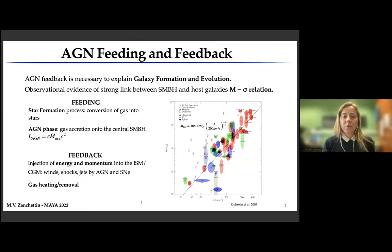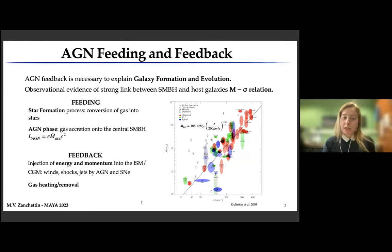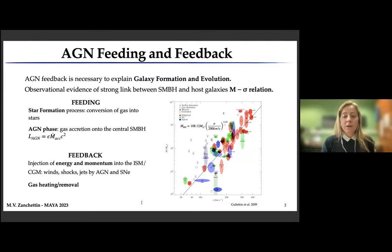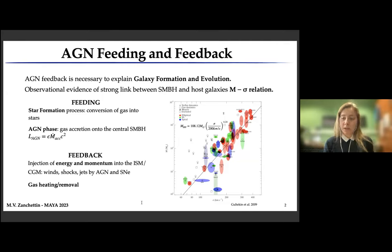First of all, what is AGN feeding and feedback? AGN feedback is strongly necessary to explain galaxy formation and evolution. There is also observational evidence of a very strong link between the supermassive black hole and its host galaxies. One of the most important is the M-sigma relation, the relation between the supermassive black hole mass and the velocity dispersion of the bulge.